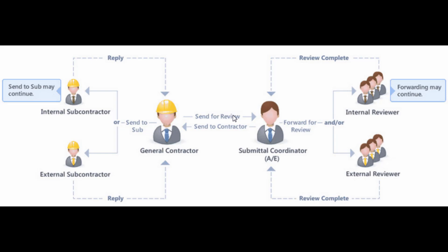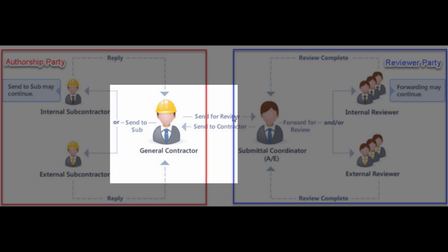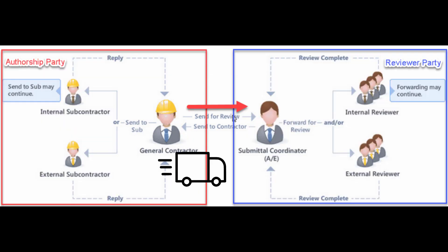In this video we are going to look at the submittal review process workflow. Like any other review process, the submittal review process is a collaboration between two parties: the authorship party and the review team party. The authorship party is led by the constructor, who is responsible for creating the submittal items, attaching shop drawings, data sheets, product data, and other documents to each submittal, then bundling the submittal items into a package.